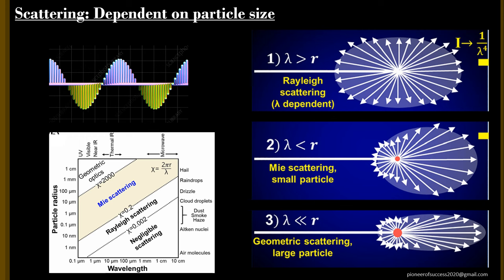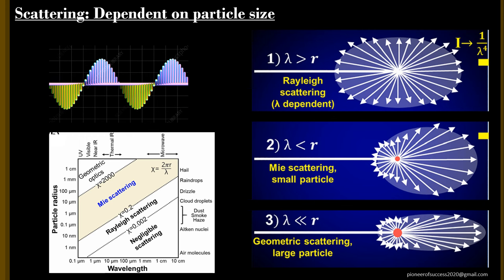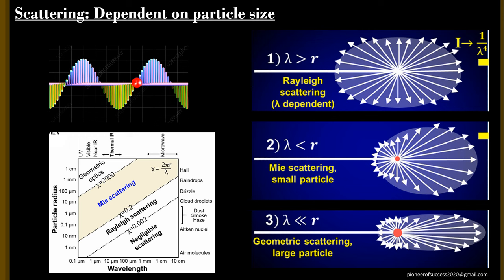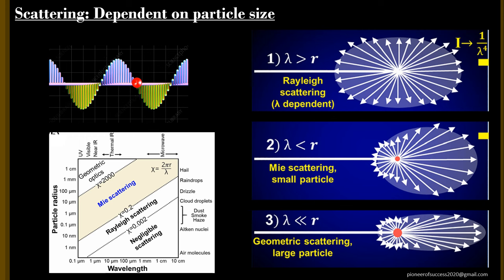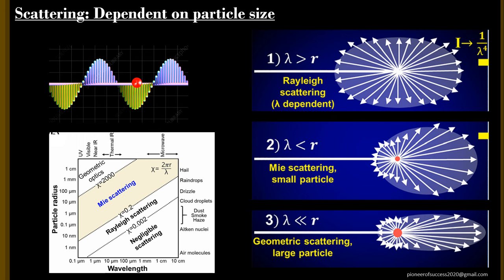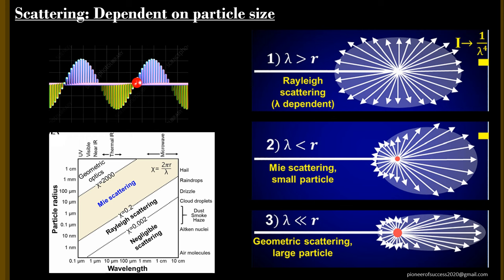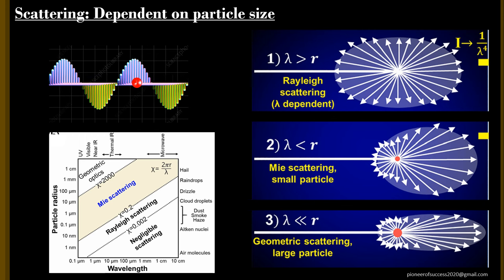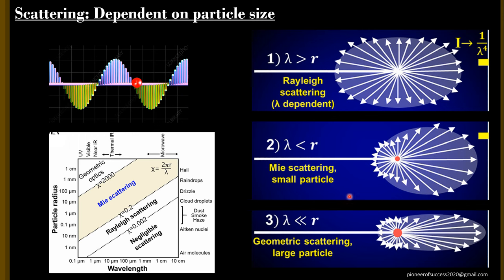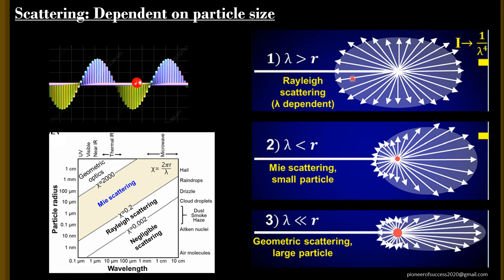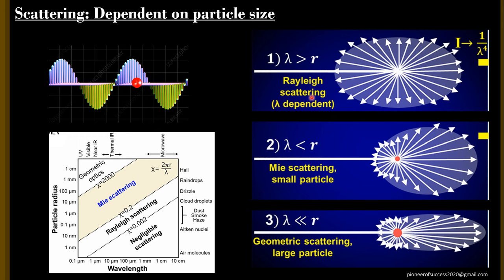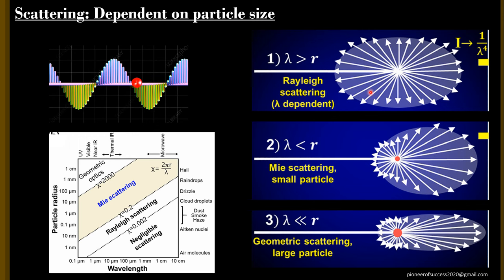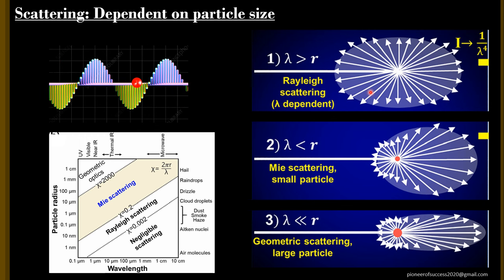Based on the size of the particle, scattering can be divided into three types. If the size of the particle interacting with the incoming wavelength is much smaller — about one tenth of the wavelength — say we consider visible light ranging from 400 to 800 nanometers and the particle is in the range of 40 to 70 nanometers, then the particle scatters the light evenly in all directions, that is isotropic scattering. This type of scattering is called Rayleigh scattering, and it is done by various small-size particles like gas molecules, smoke, or small aerosols.